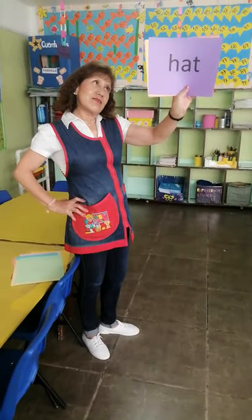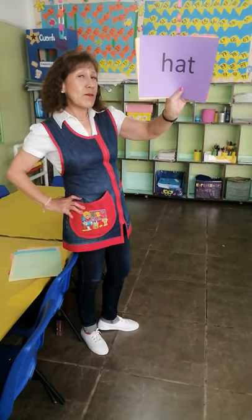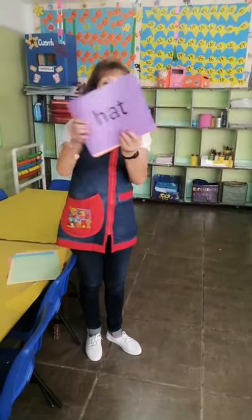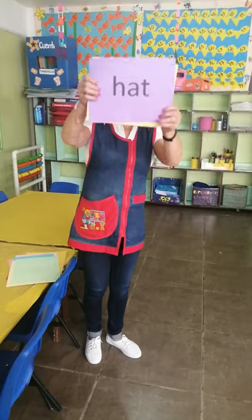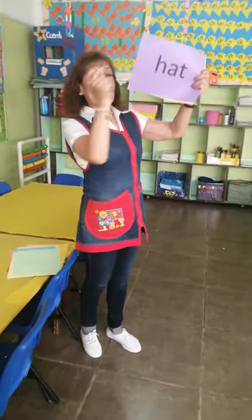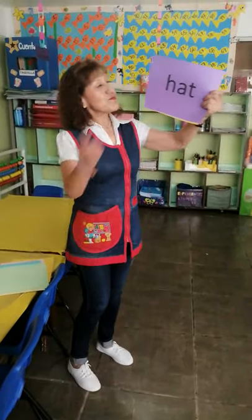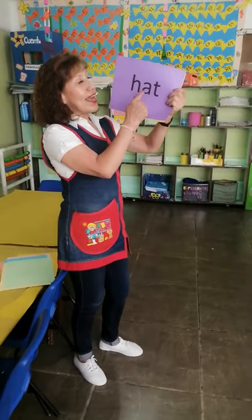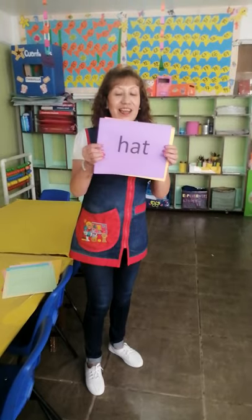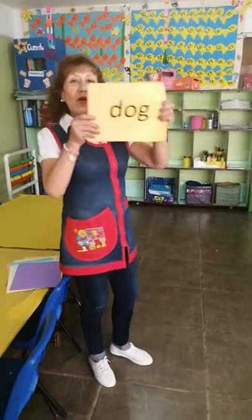Now let's continue with this word — what does it say here? Can you spell it for me, please? No, it's not 'bat,' it's 'hat.' Yes, it's 'hat.' It's not a B, it's an H. Now you are going to spell 'hat': H-A-T. Perfect.